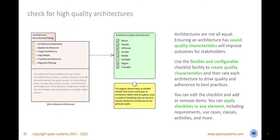Check for high-quality architectures and see how your models stack up by applying a checklist to architectures, packages, or individual elements. Extend the checklist to other elements such as capabilities, business functions, application components, and more, to ensure rigor and standardization. Use a checklist pattern of predefined quality characteristics, or define your organization, project, or team qualities for each element type.